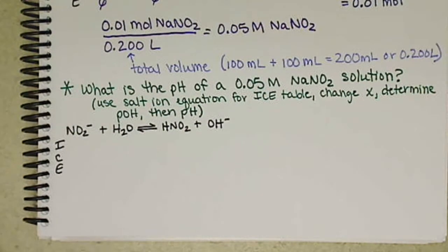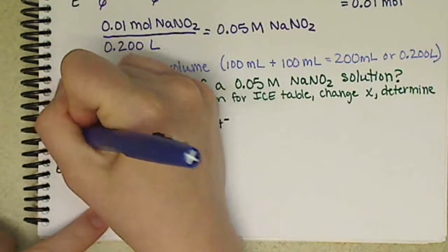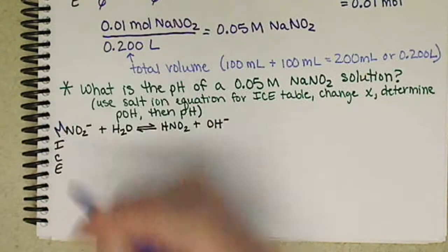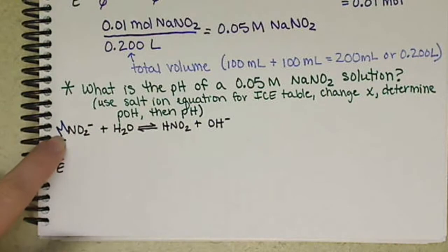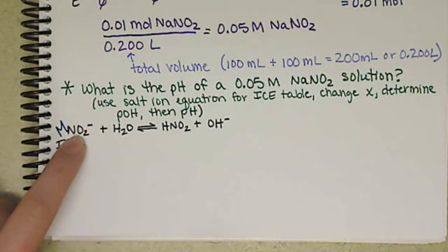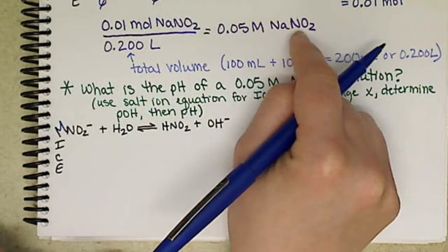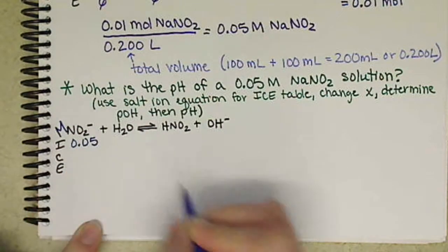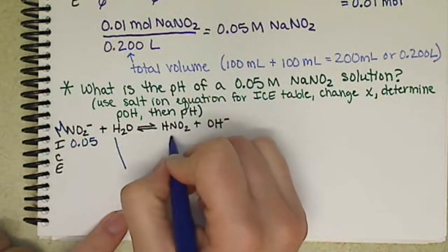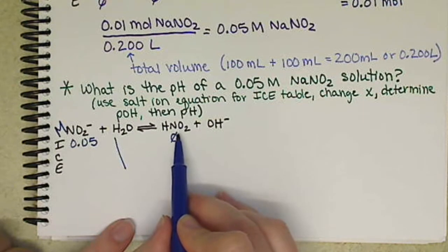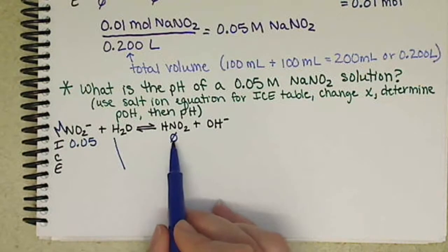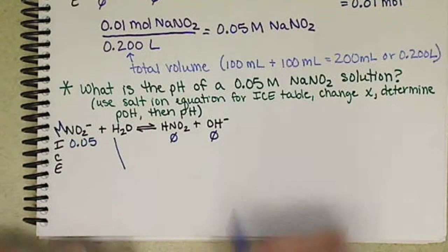We're going to set up our ICE table and this is now in molarity because we only have one solution now that we're dealing with. The titration has already occurred so we don't have to worry about our total volume or our two different volumes. We just have one. So we're going to use molarity. So our initial for the NO2-, this splits apart into a 1 to 1 stoichiometric ratio. So our concentration of NO2- is the 0.05. We don't care about water. Our initial of HNO2, this is zero. Because what we started with is titrated and it's gone away. So zero initially and the same thing for hydroxide ion.